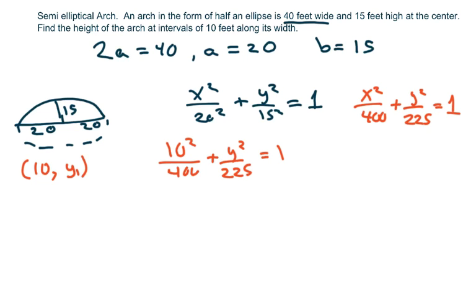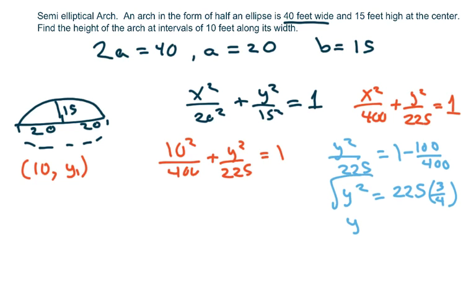So I'll move everything over. I get y squared over 225 equals 1 minus 100 over 400, which is just 1 fourth. 1 minus 1 fourth is 3 fourths. So we get y squared equals 225. You're welcome to use a calculator of 3 fourths. And if you square root both sides, y is going to be approximately 12.99 feet.